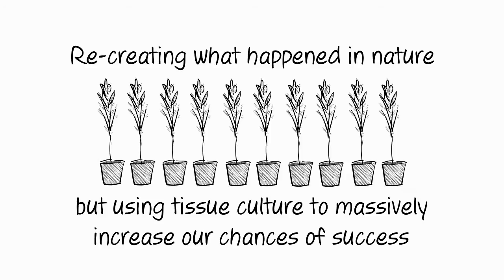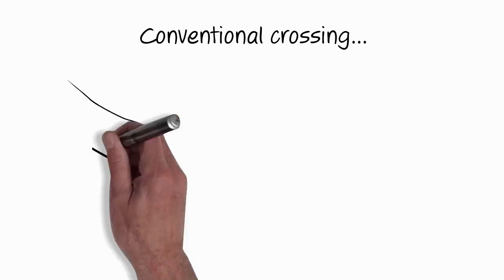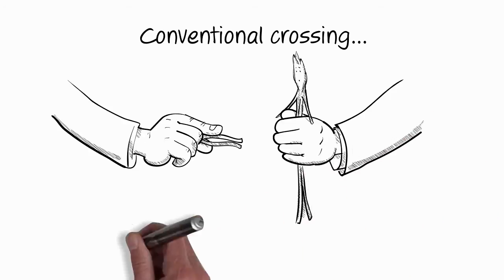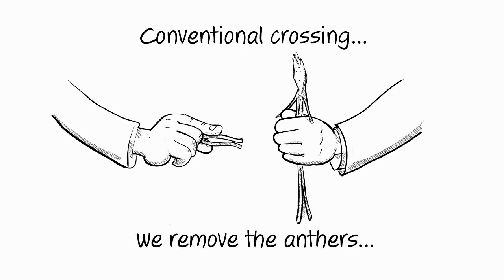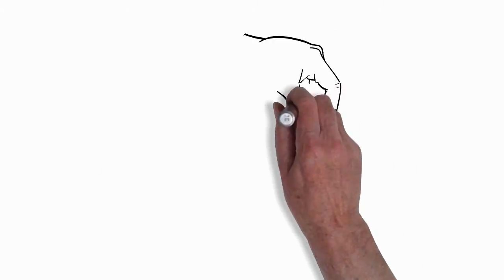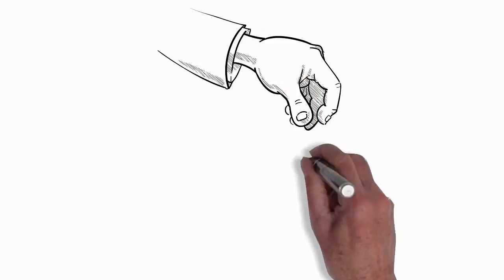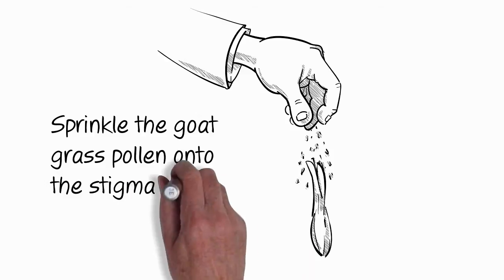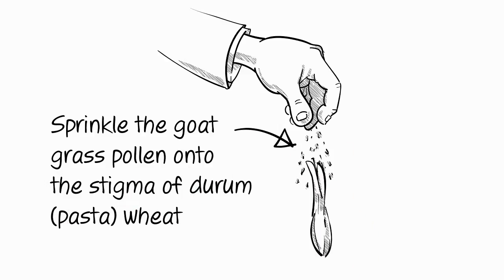This is conventional crossing and what I mean by that is that we remove the anthers which is the male part of the plant which produces the pollen. Once we remove the anthers we get the donor plant and we sprinkle the pollen from the donor plant onto the stigma which is the female organ of the plant. And that's known as conventional crossing.